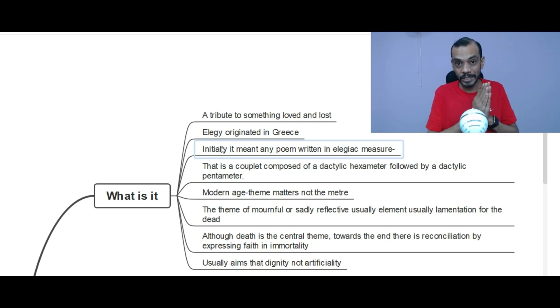Then, in the modern age, it is not the elegiac meter, but the theme matters. So, as we have studied a lot of elegies, what is the theme? The theme is of something mournful or sadly reflective. Usually, the lamentation for the dead, when somebody dies, an elegy is written.